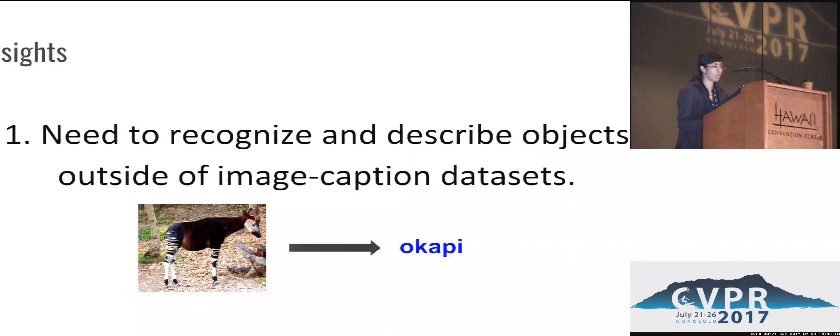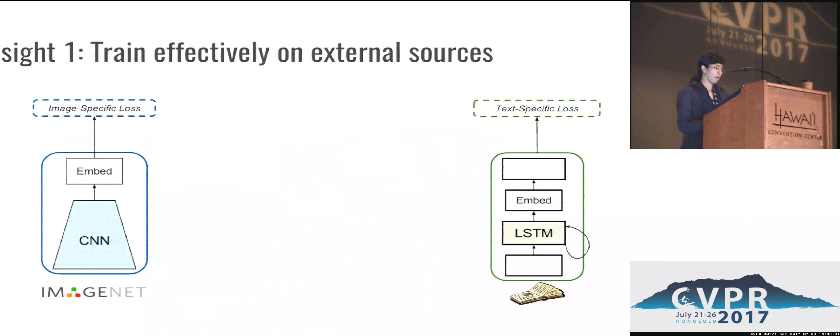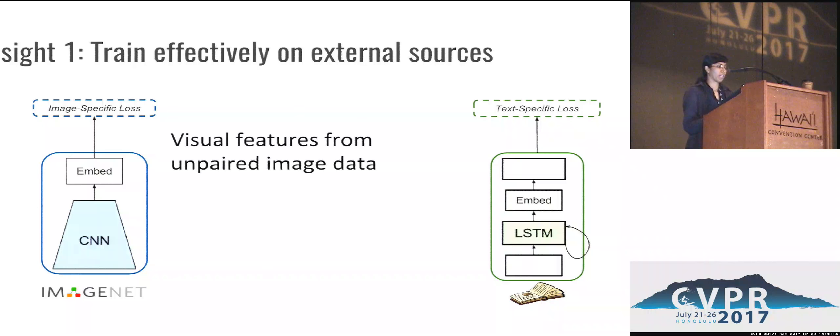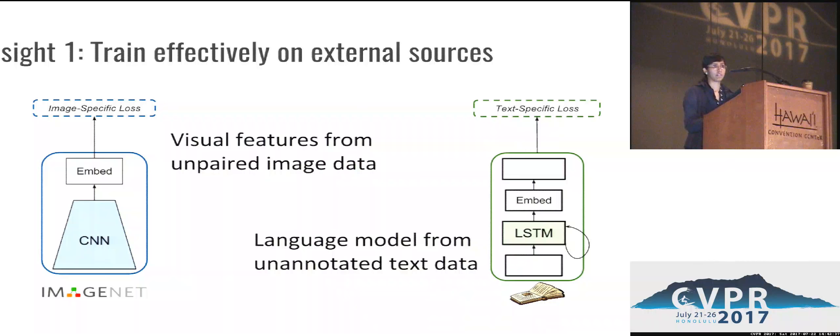In order to generate descriptions for several objects, we first need to recognize and describe these objects outside of image caption datasets. To do this, we train our model on external sources of data. Specifically, we train our visual recognition network on unpaired image data — just images with labels, as seen in ImageNet — and we train our language model on unannotated text data, which is plain sentences, for example from Wikipedia.